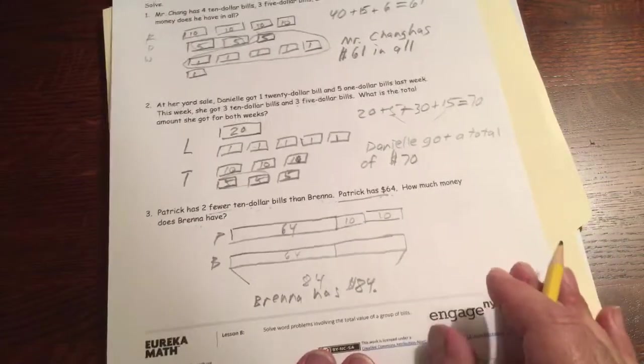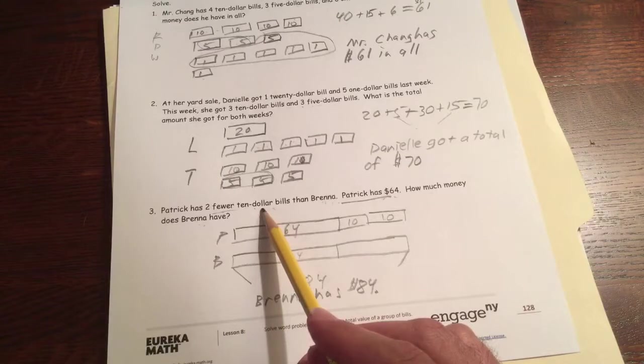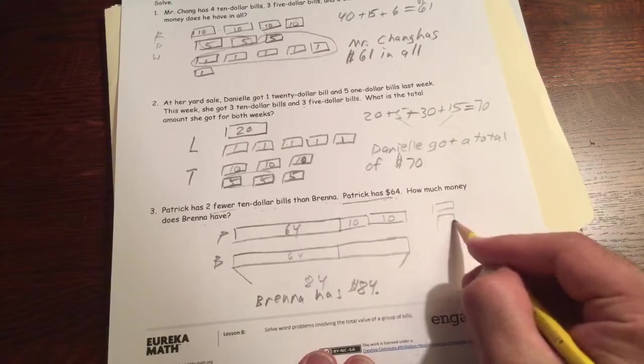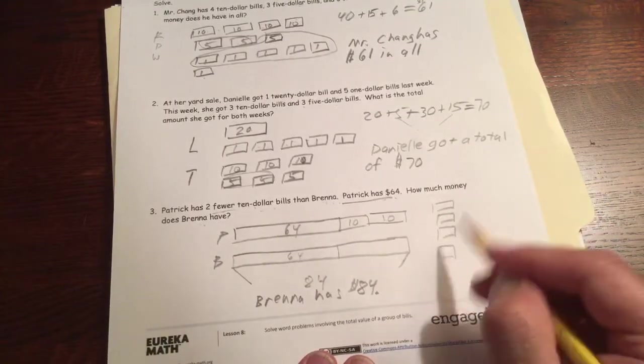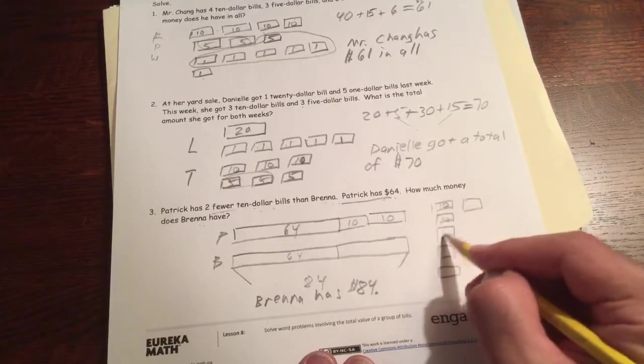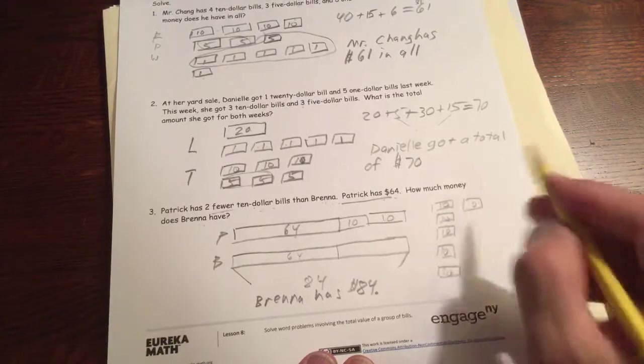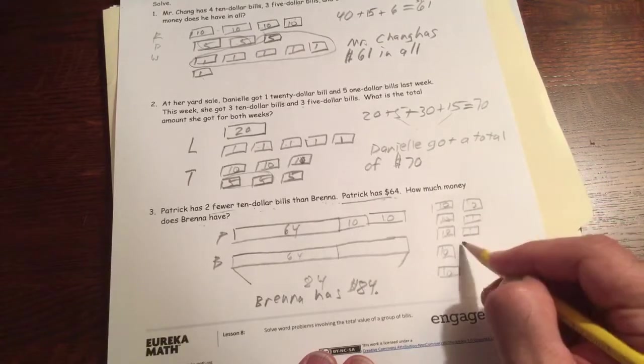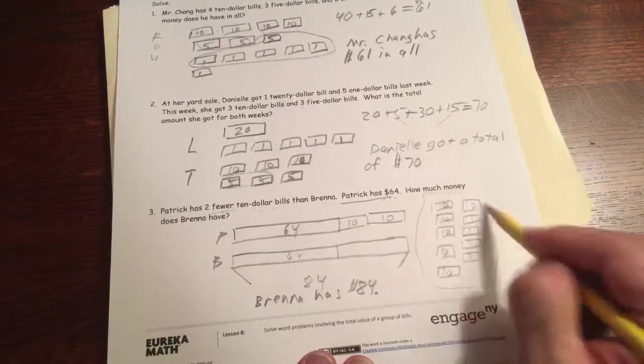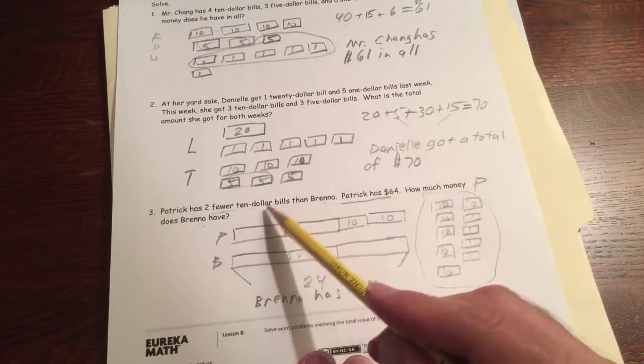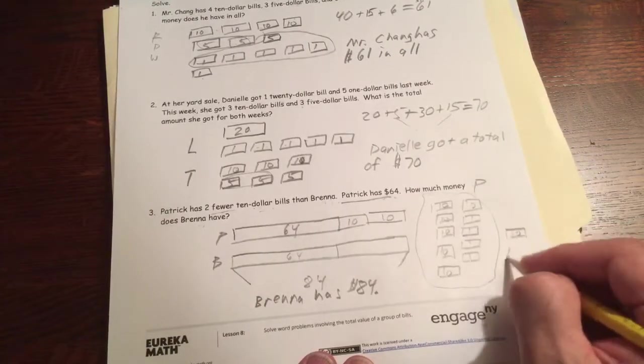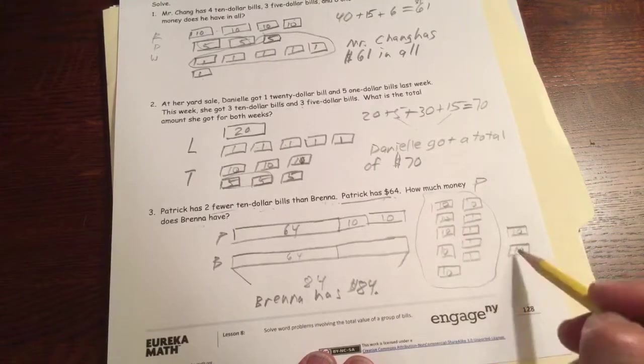You could also have done this by just drawing the money. I mean, if you're counting tens, you know you need $10 bills. Patrick has $64. You could have drawn, one, two, three, four, five, six. These are all $10s. And one, two, three, four. And this can all be like Patrick's money. And he has two fewer $10s. So Brenna has all of this plus two more $10s.